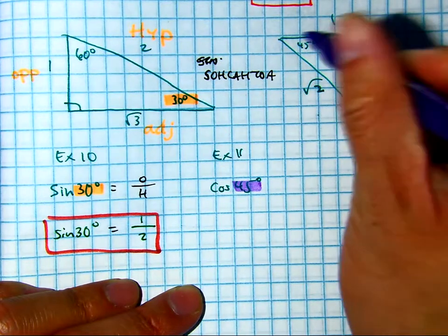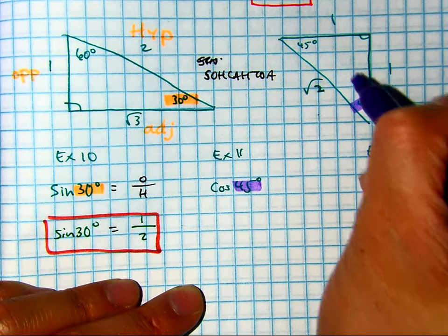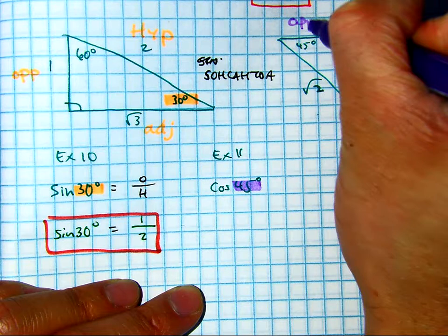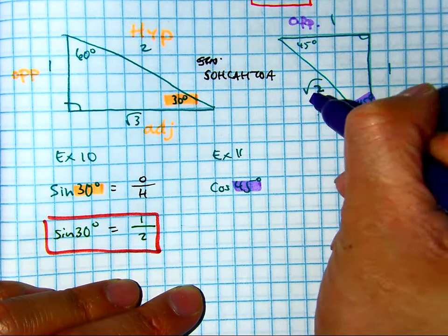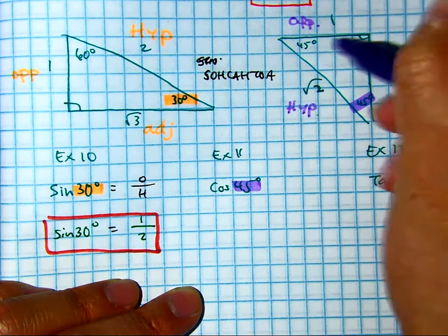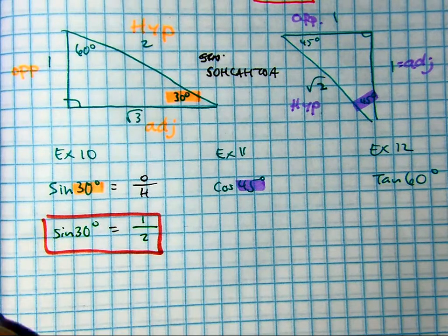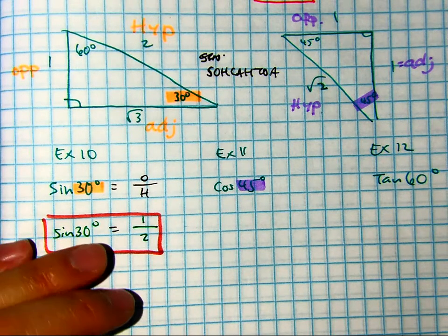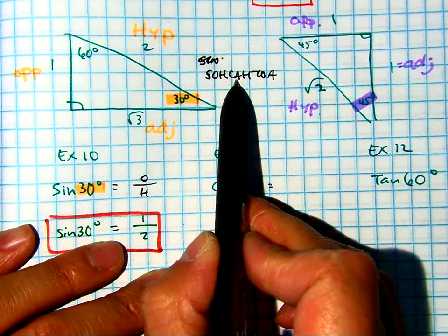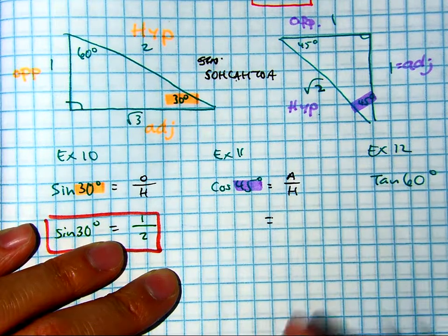If I go across, this is called the opposite. This one is called the hypotenuse, across the right angle. And the last side is called the adjacent. Class, which two sides is cosine? Adjacent over the hypotenuse. So my adjacent side is what? And my hypotenuse is?